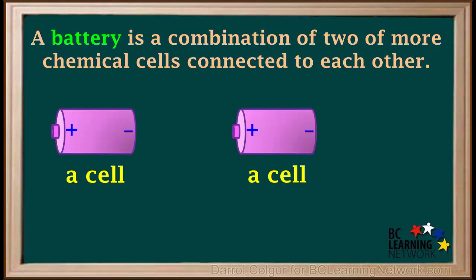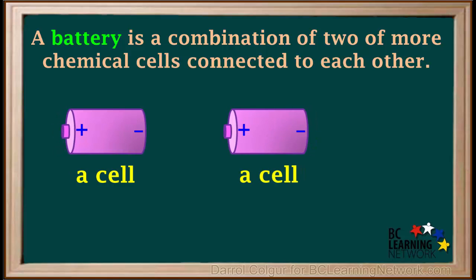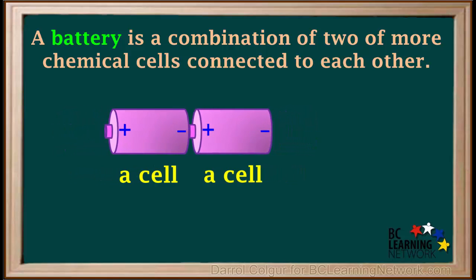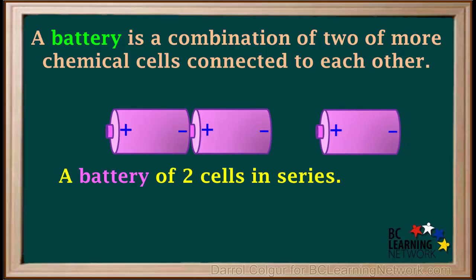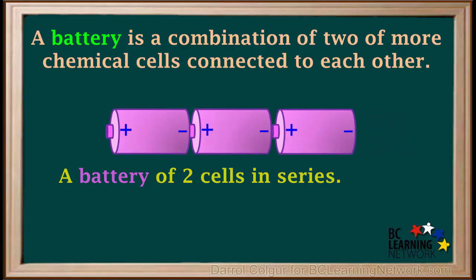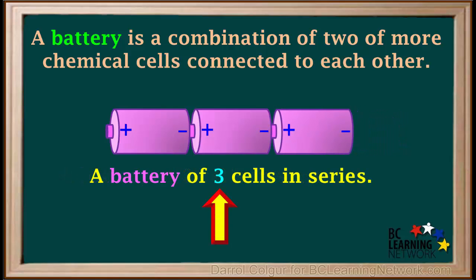For example, if we attach the positive end of one cell to the negative end of another cell, like this, it forms a battery of two cells in series. Adding another cell like this will give us a battery of three cells in series.